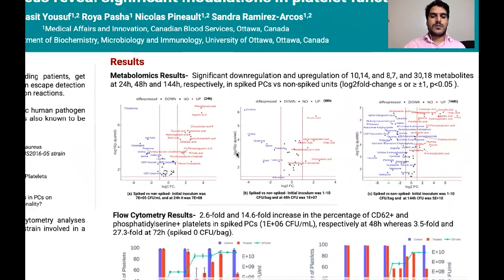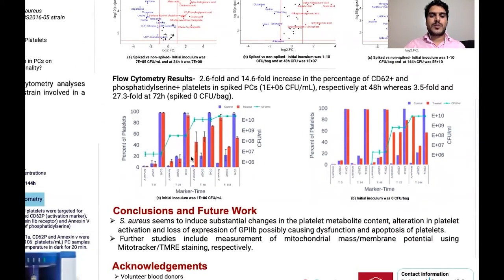Now going to the flow cytometry results: we spiked the PCs with 1×10⁶ CFU per mL of the CBS 2016 strain. As you can see here, at 24 hours there was very little difference between the markers. However, at 48 hours and 144 hours there was a highly significant increase in the expression of CD62P, as you can see here, and also in phosphatidylserine detected by Annexin V.